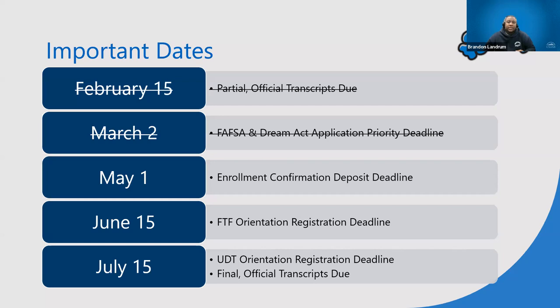Here are some important dates: May 1st is the enrollment confirmation deposit deadline. June 15th is the first-time freshman orientation registration deadline — orientation is mandatory for all students, including transfer students. Transfer students, your orientation deadline is July 15th, along with final official transcripts also due July 15th. School starts August 22nd.